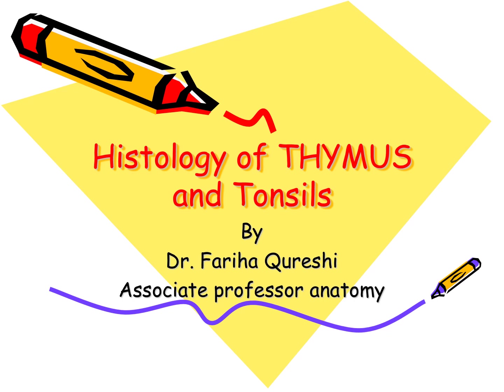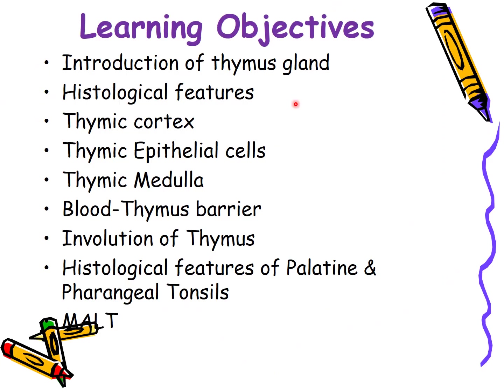Assalamu alaikum, hope all of you are fine. This is our next lecture on lymphoid tissue — the histology of the thymus gland. In this lecture we'll discuss the histological features of the thymus, the thymic epithelial cells, the blood-thymus barrier, involution of the thymus, the histological features of the palatine and pharyngeal tonsils, and then the MALT and the gut.